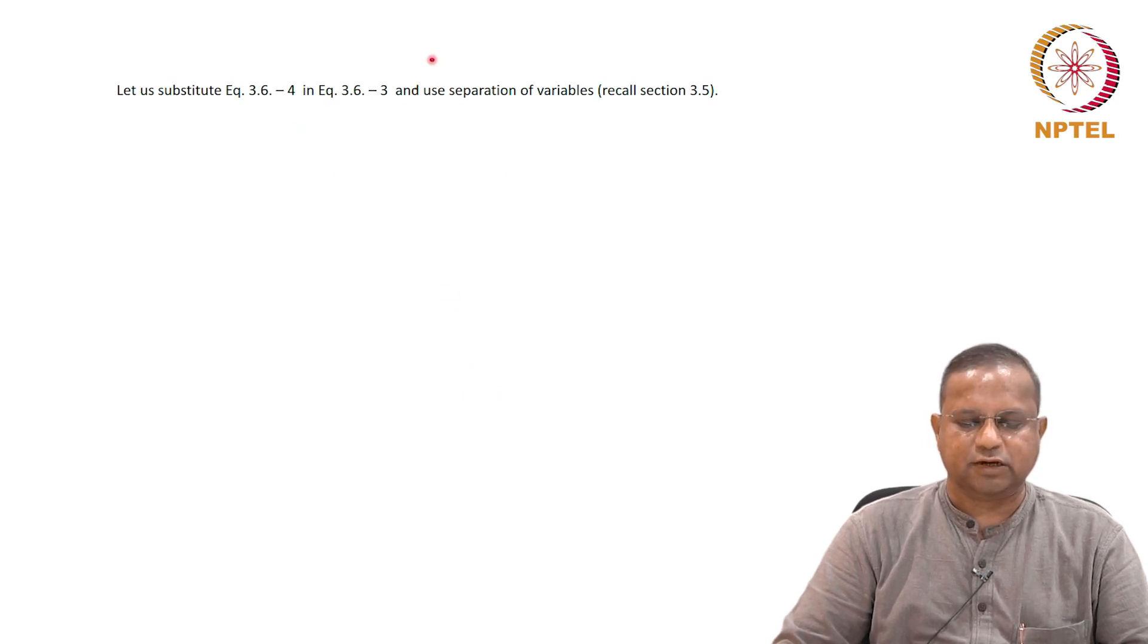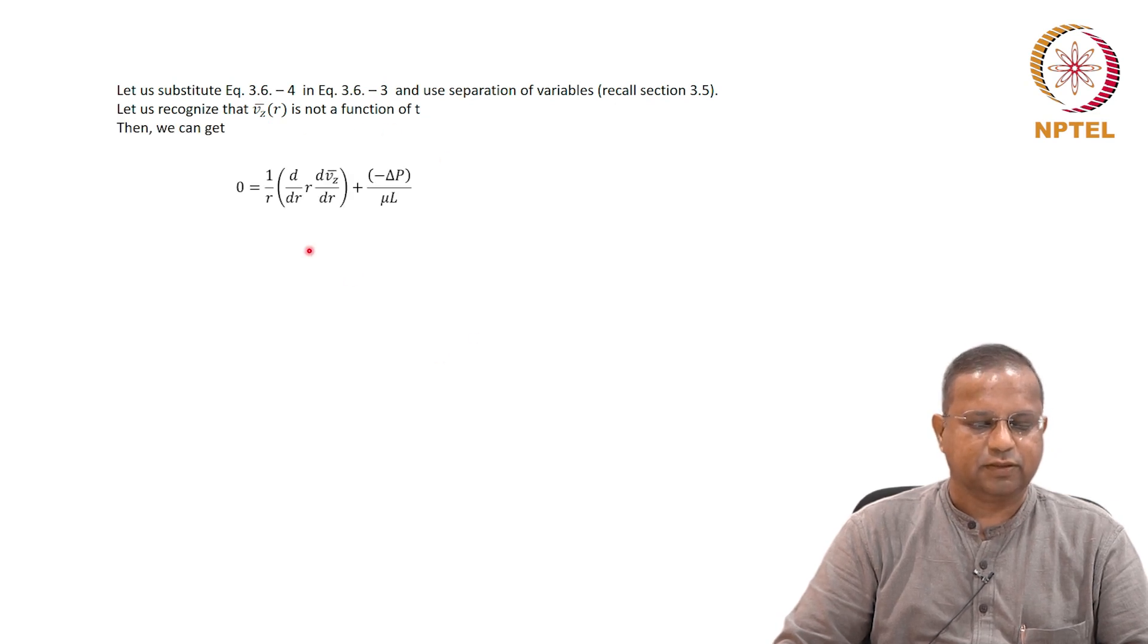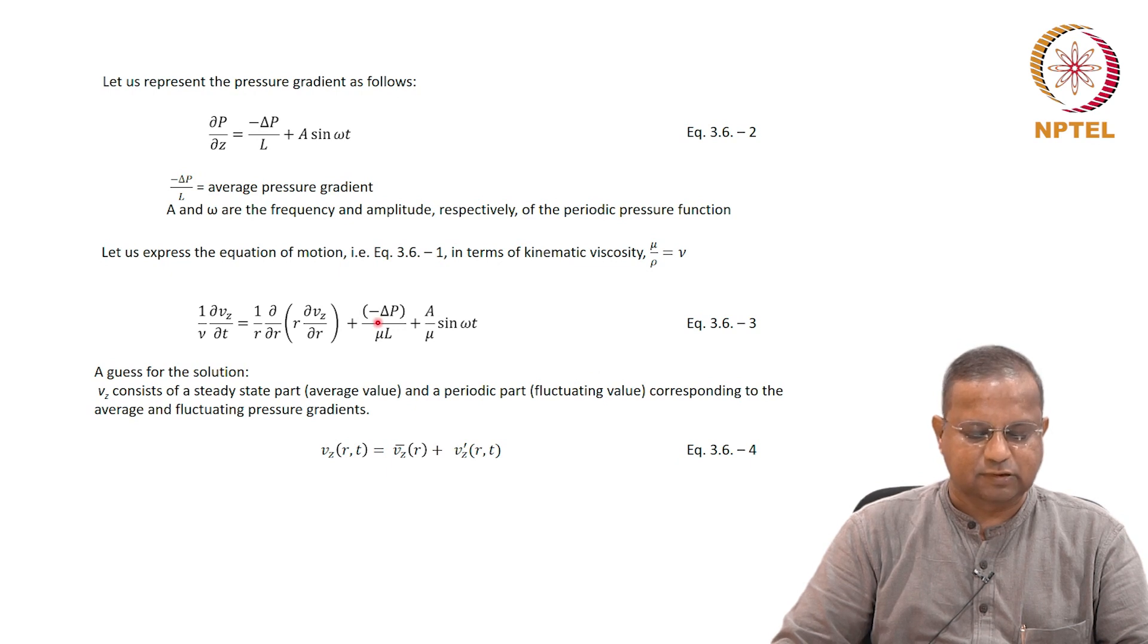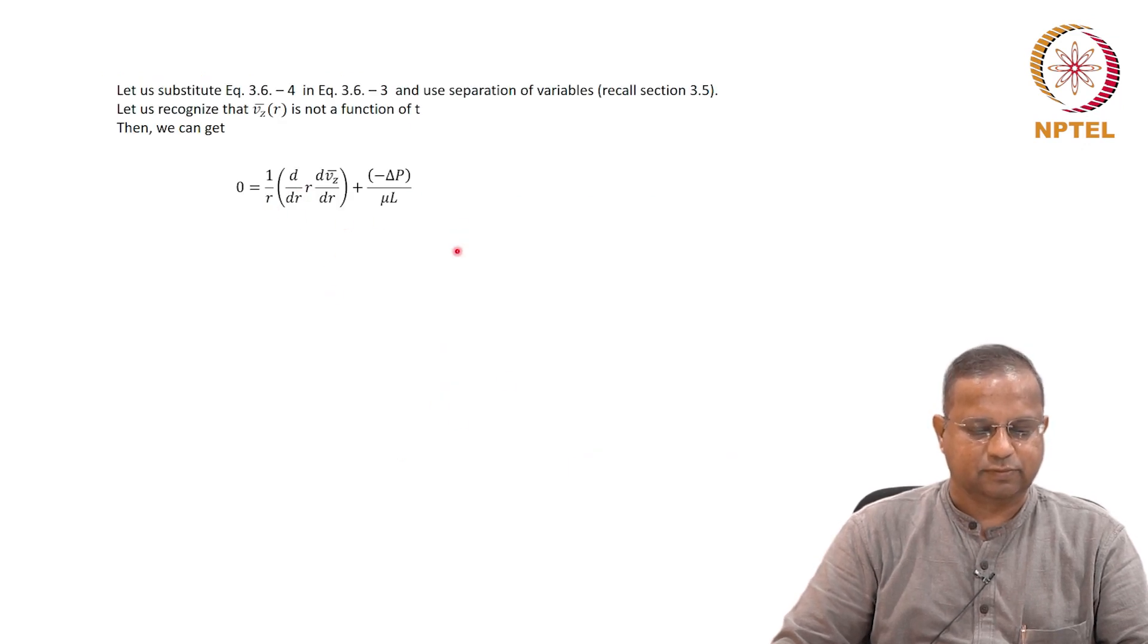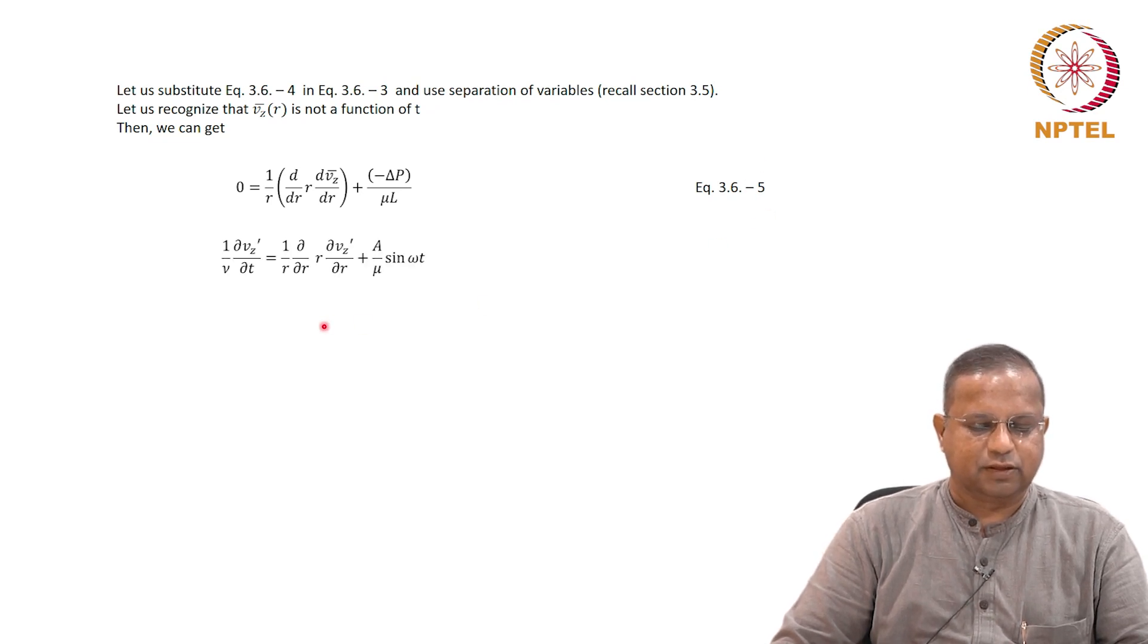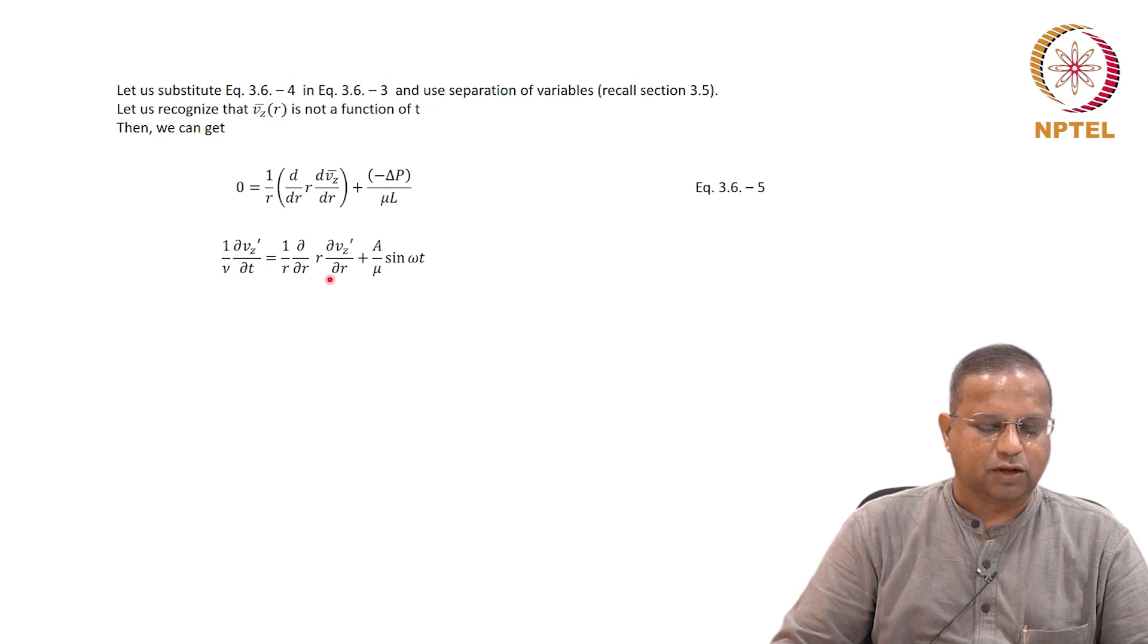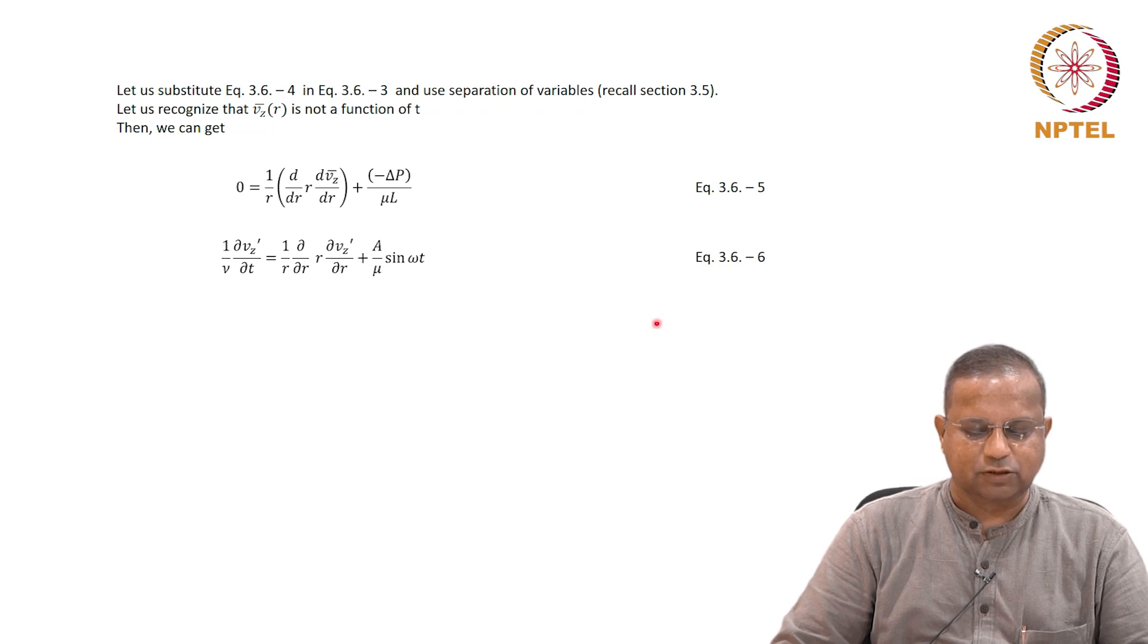Now we substitute 3.6-4 into 3.6-3 with the recognition that the average v_z is not a function of t. Since there is a standard component, an average component, and a fluctuating component, this equation reduces to equation 3.6-5 and equation 3.6-6: (1/nu)(dv_z'/dt) = (1/r)(d/dr)(r*dv_z'/dr) + (a/mu)*sin(omega*t).